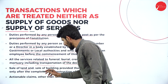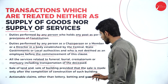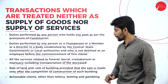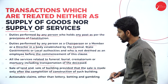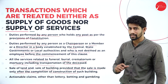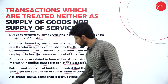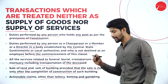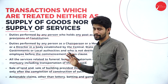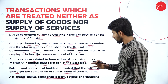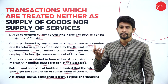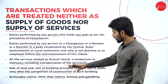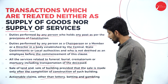Next, sale of land and sale of building — provided that the sale is made only after the completion of construction of such building. That sale will not be considered as the sale of services or the sale of goods. Next, actionable claims other than lottery, betting, and gambling. For lottery, betting, and gambling, GST will be applicable. But for actionable claims other than lottery or winnings from betting or gambling — if you are earning any profit from financial instruments, there will be no tax on such profit. Tax will be imposed only on lottery, betting, and gambling.